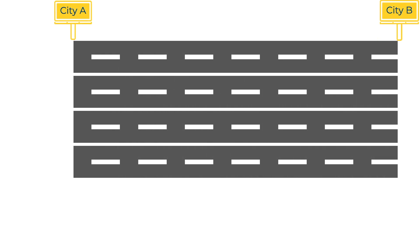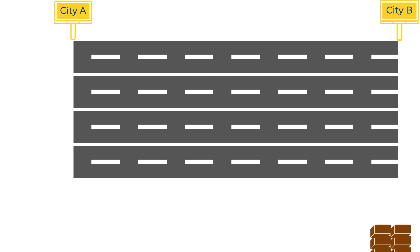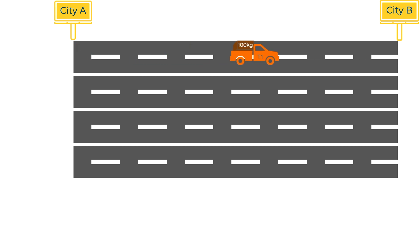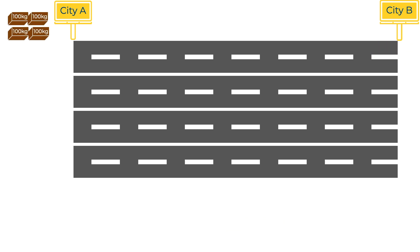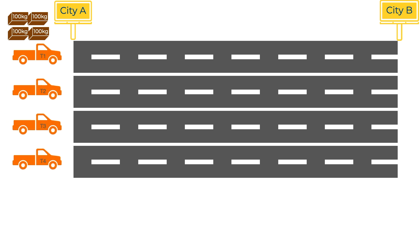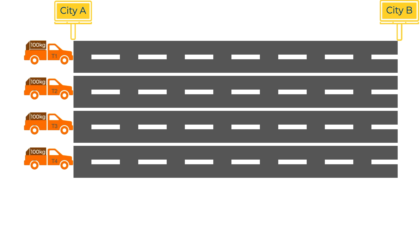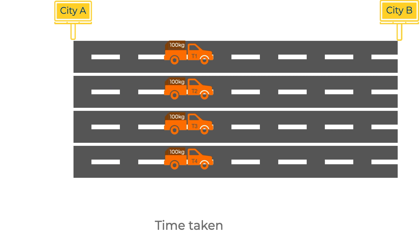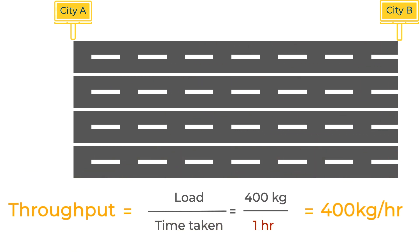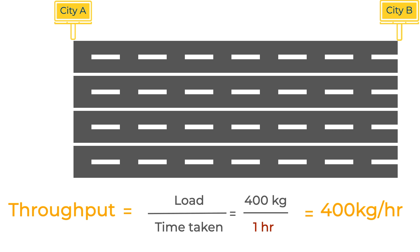Let's say there is a four-lane road from city A to city B, and some commodities like vegetables and fruits have to be transported. One truck can transport 100 kg of fruits from A to B within an hour. If 400 kg has to be transported, and every truck travels on different lanes, then within an hour, 400 kg of commodities could be transferred. The throughput of this four-lane system becomes 400 kg per hour.